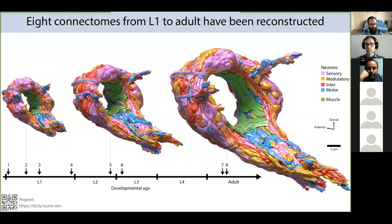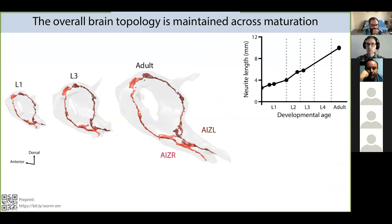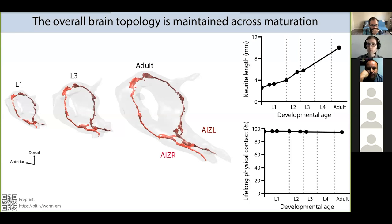One thing immediately obvious is that the nervous system gets bigger without changing in overall shape. We can quantify this by looking at individual cells — such as AIZ — and measuring the length of each neurite as well as the physical contact between cells. The total length of all neurites throughout the brain increases fivefold, and this growth is mostly proportional, such that physical contacts between cell pairs are mostly persistent throughout life. Contacts seen in L1 are mostly the same as in the adult.